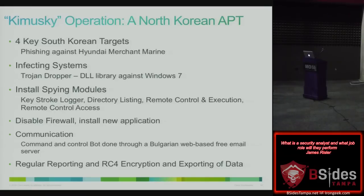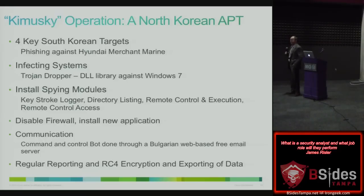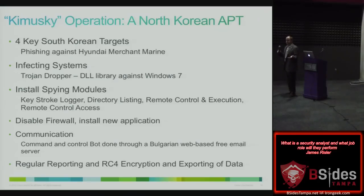They sent emails that looked like they came from colleagues, hoping that people would click on the link. They tried all those combinations until they were in — only took one machine. Then they installed their Trojan dropper, installed some DLL software, got keystroke logger, directory listing, remote control execution, and remote control access on the machine. Then they turned off the firewall and installed their applications, and disabled antivirus. Those should have been logs generated off that machine — or the user should have seen that their firewall was turned off.